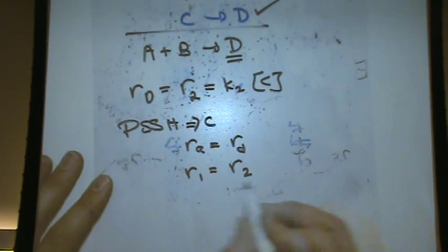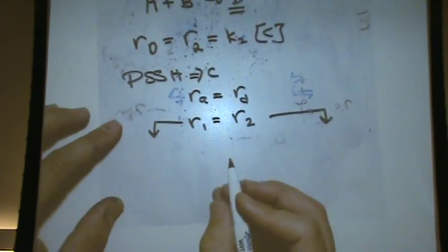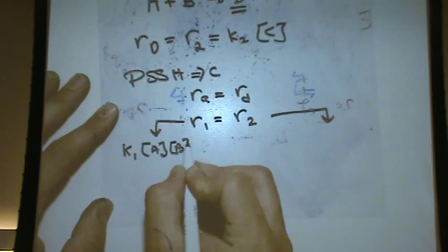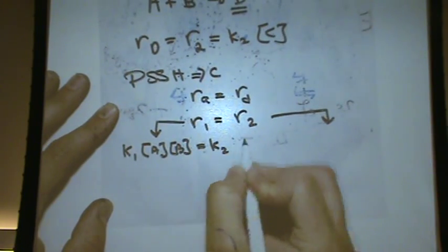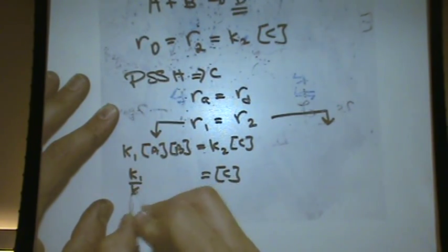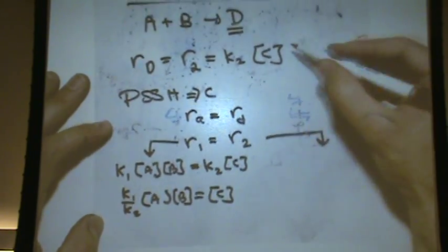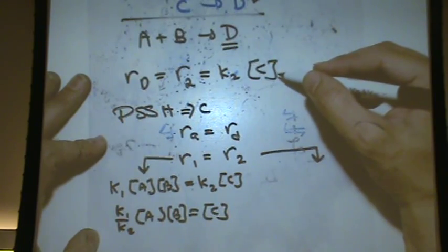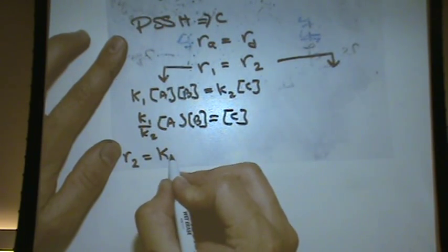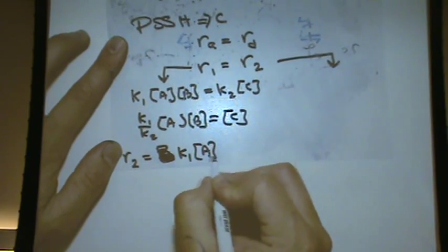There are actually two ways you can solve this at this point. Let's do the hard way first. The hard way: K1 times A times B equals K2 times C. So C is equal to K1 over K2 times A times B. Then you plug this back into the rate equation, because now you have an expression for C. The rate of production of D is K2 — that cancels — so it'll just be K1 times A times B.